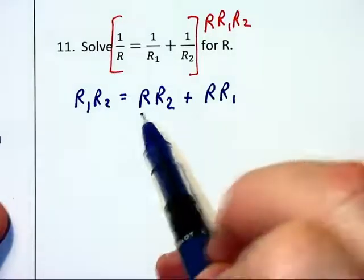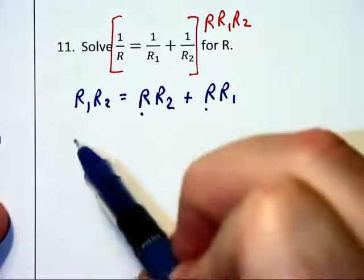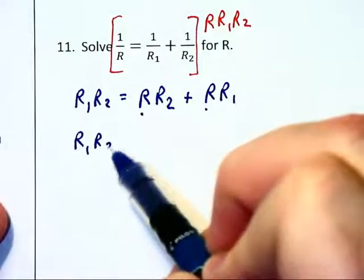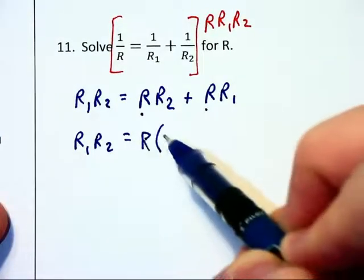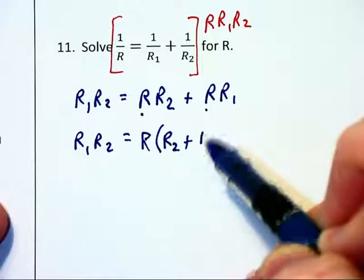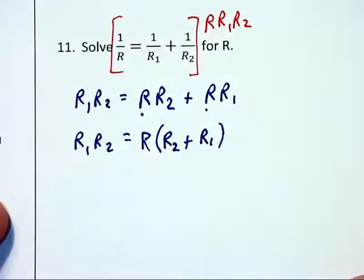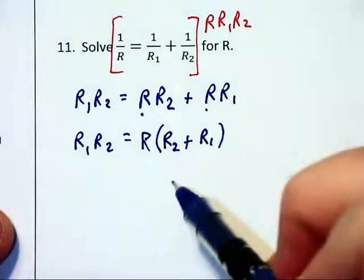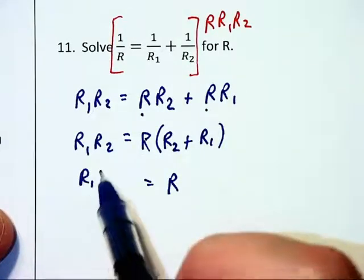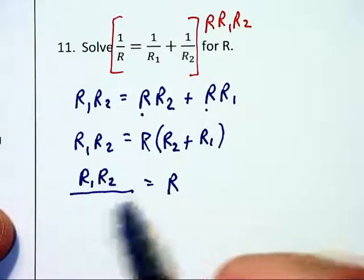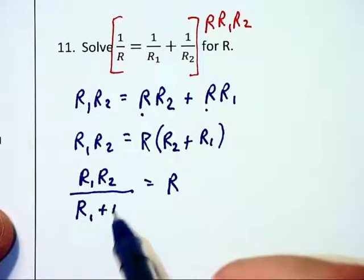Now we're solving for R which shows up in two different places. So on the right hand side of the equation we can factor the R out leaving R2 plus R1. And if you want to rearrange the order of that that's fine because addition is commutative. And so we have R is equal to R1, R2 divided by R1 plus R2.